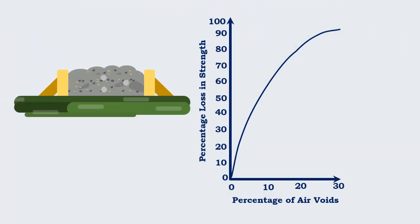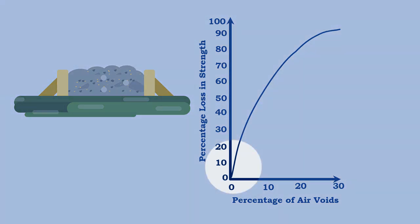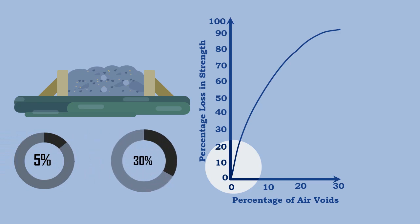The graph shows the relationship between loss of strength and presence of air voids in the concrete. It is clear from the graph that even presence of 5% voids reduces the strength of concrete by about 30%.